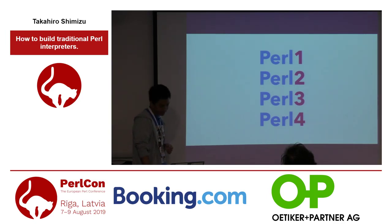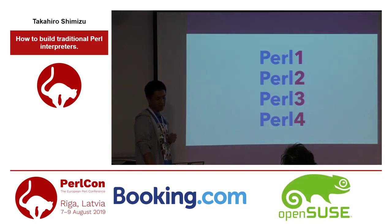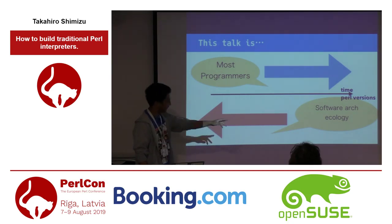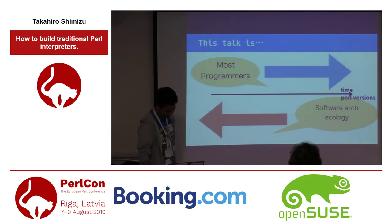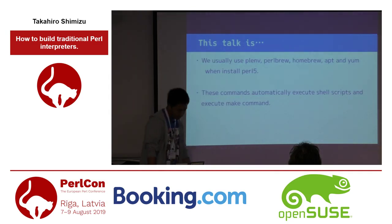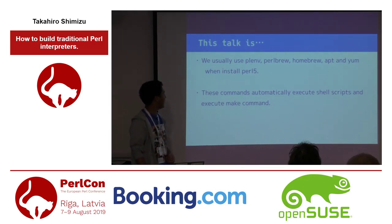If Perl 2 is real and the source code is left, I want to execute and check it. This talk focuses on that direction — building historical Perl versions. We usually use plenv, perlbrew, Homebrew, apt, and yum when installing Perl 5.